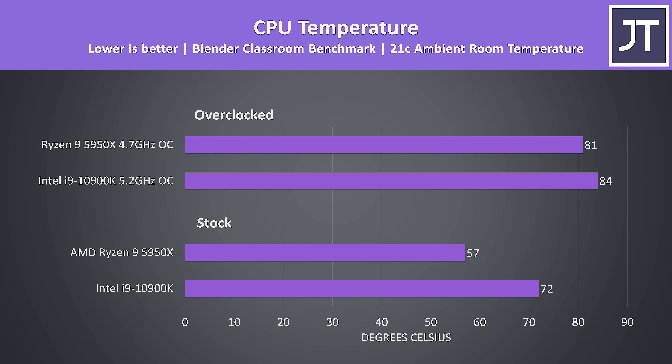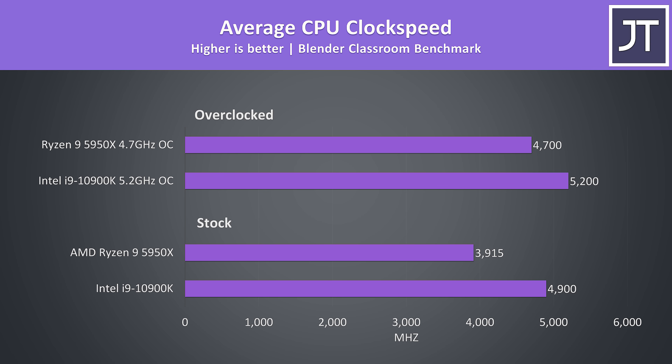Higher power draw typically results in more heat, so it's not really a surprise that the 10900K was also running warmer. The gap closes with both overclocked, as the 5950X overclock does have a higher voltage, but it's still cooler and again performing better. Looking at average clock speeds during the Blender test, the clock speeds of all 16 cores are around 800MHz higher once overclocked, meanwhile the 10900K was only getting a 300MHz boost over itself at stock, so the 5950X has more overclock headroom comparatively.